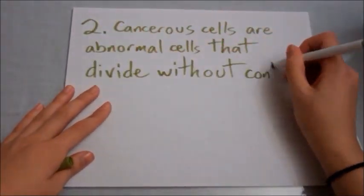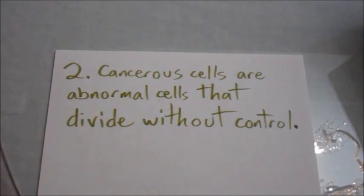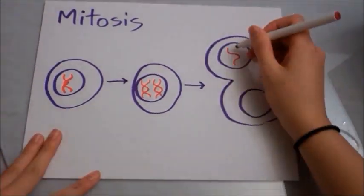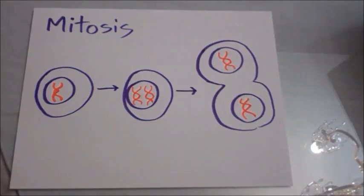Cancerous cells are abnormal cells that divide without control. To understand how cancerous cells are abnormal, first we have to understand what normal cells are like. Cells divide through a process known as mitosis, where they replicate their DNA and divide into two.